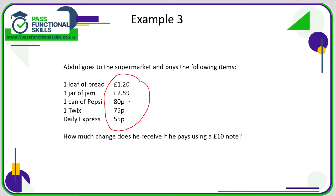I would convert the ones in pence to pounds and pence: 80p becomes £0.80, 75p becomes £0.75, and 55p becomes £0.55. Using a calculator, we add £1.20 plus £2.59 plus £0.80 plus £0.75 plus £0.55, which comes to a grand total of £5.89.